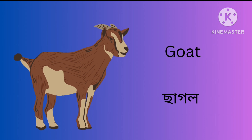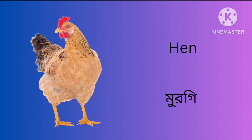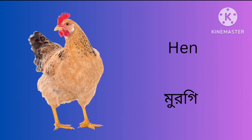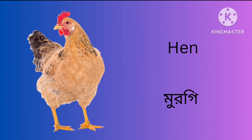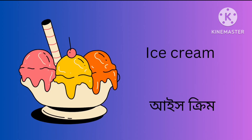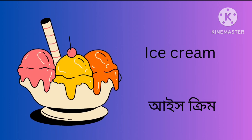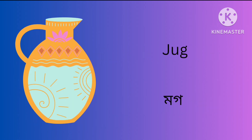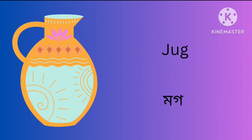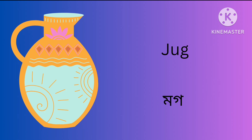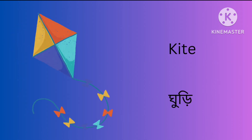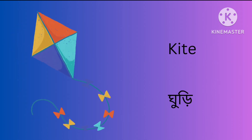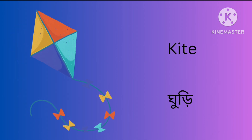G for Goat. H for Hen. I for Ice Cream. J for Jag. K for Kite.